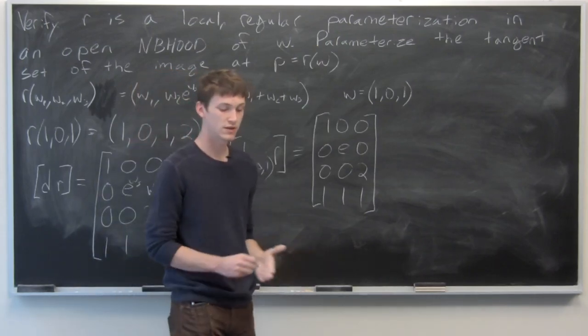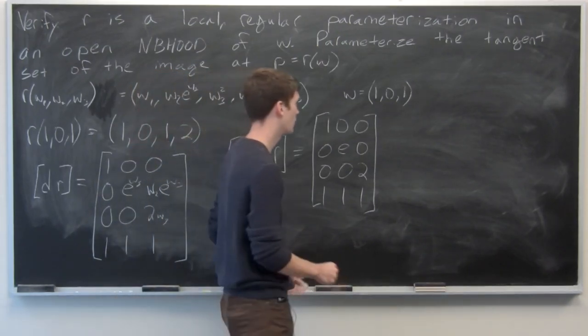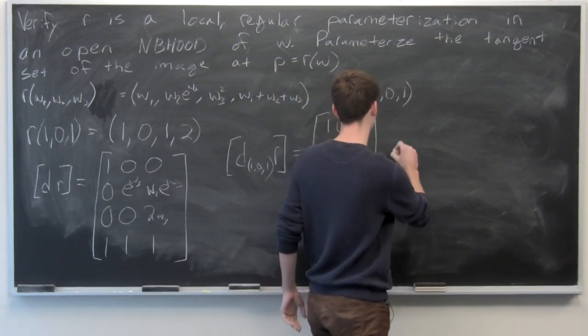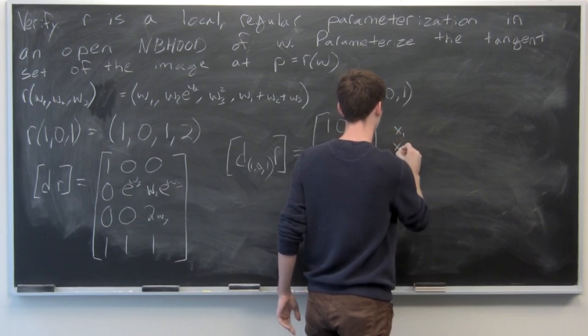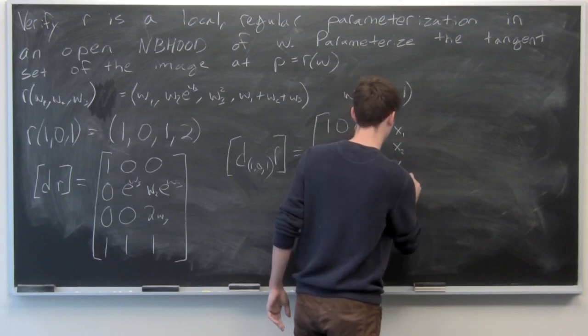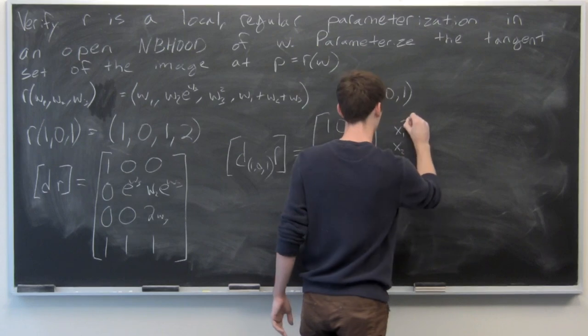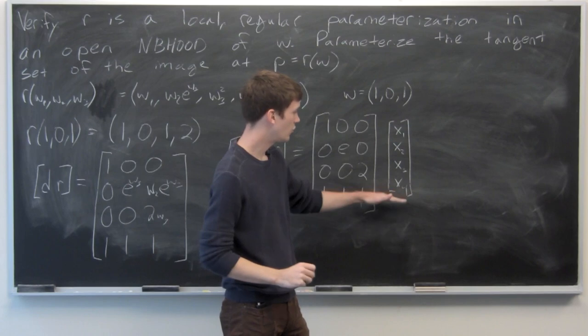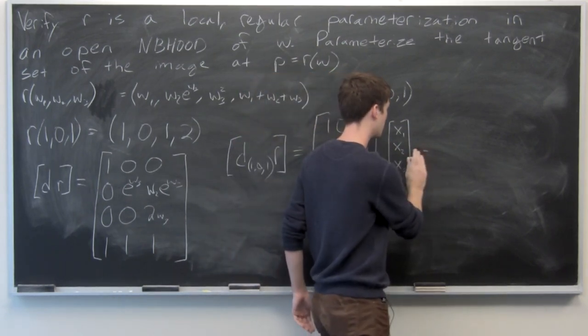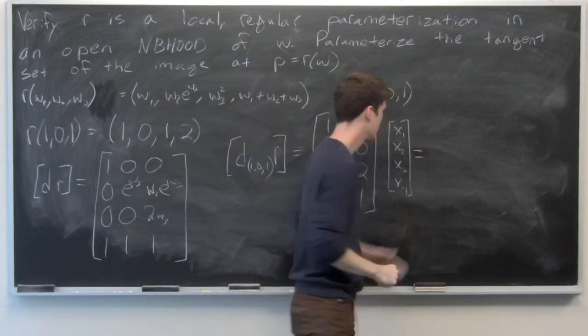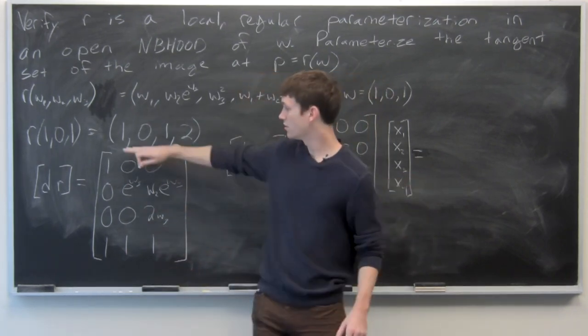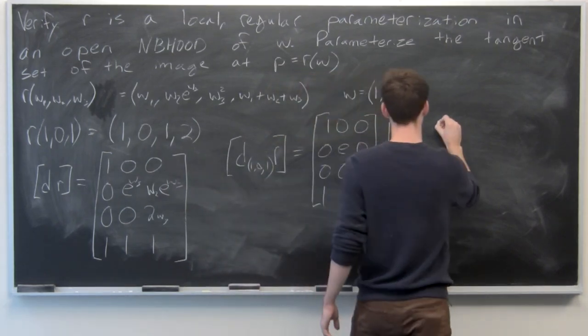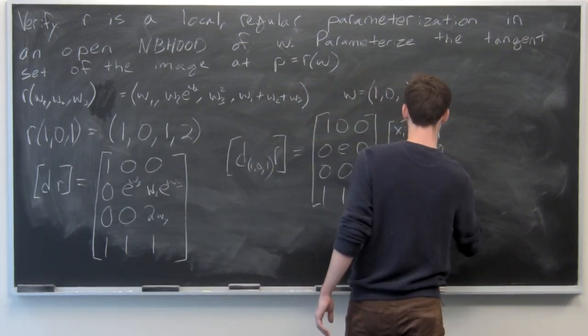And that the parameterization is local and regular there. So that means we have a tangent set that's defined in the following way. Our tangent set is defined as the points equal to our point R of w, so 1, 0, 1, 2.